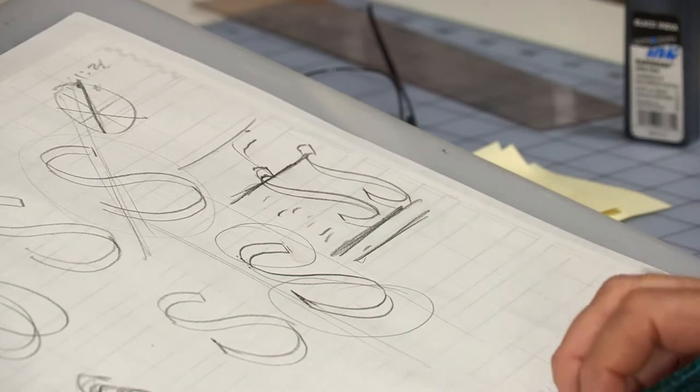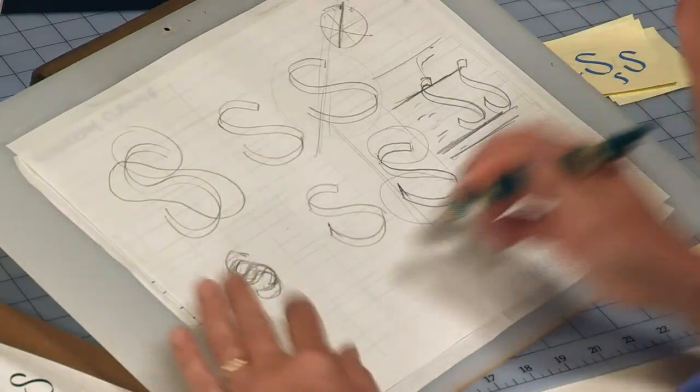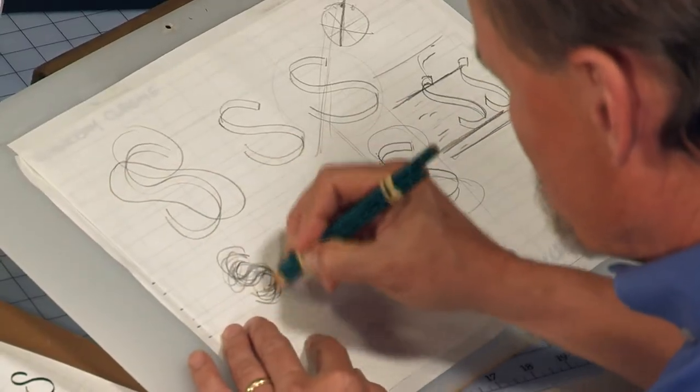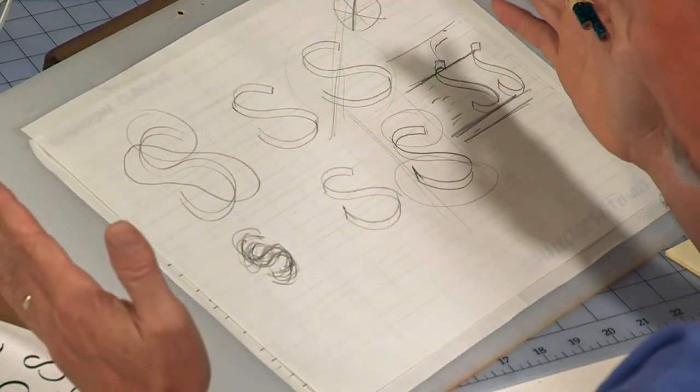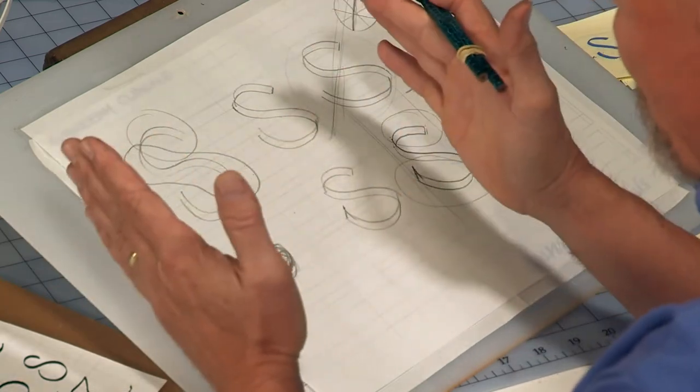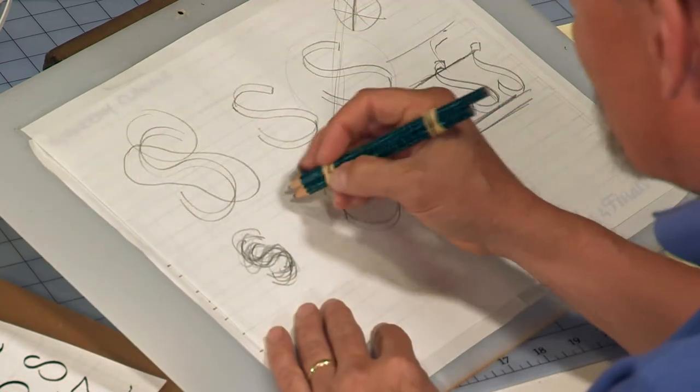And then this one is fairly short. There we go, that's not a bad s. So as you can see, if this is a traditional s, the chancery cursive s has been put in a vice and it's been squeezed, so it's a lot more vertical.